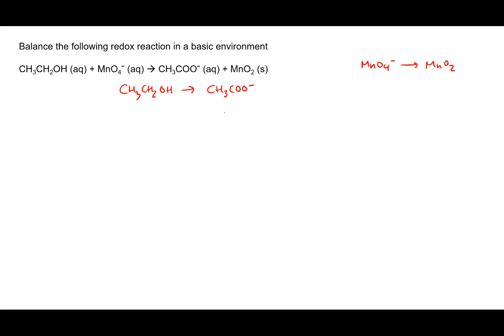The next thing we want to do is balance the oxygens by adding however many water molecules are needed to whichever side they're needed on. On the left side we only have one oxygen, while on the right side we have two, so we need to add an H2O to the reactant side. Now we have two oxygens on the left and two oxygens on the right.